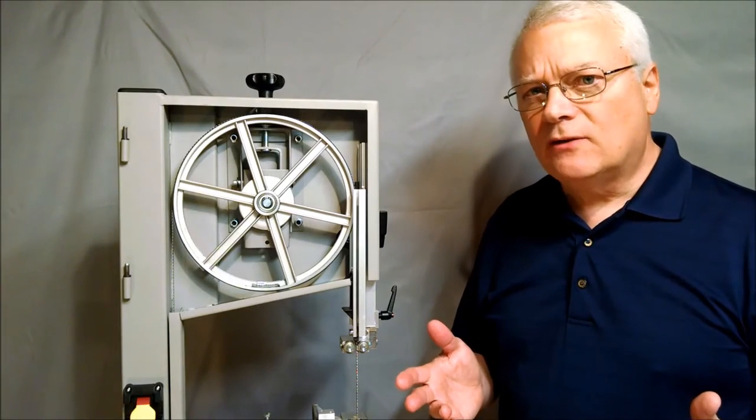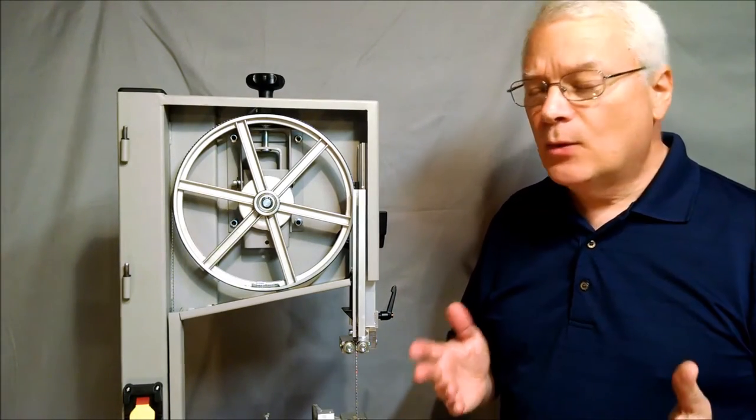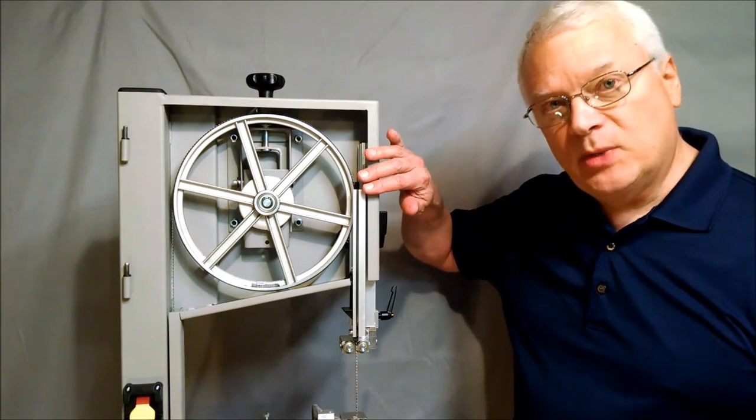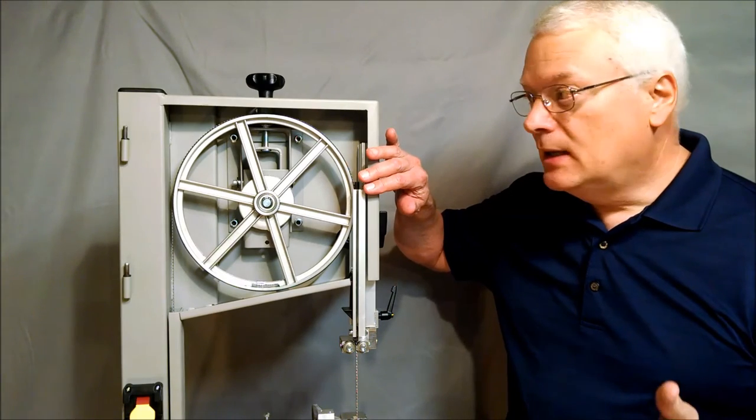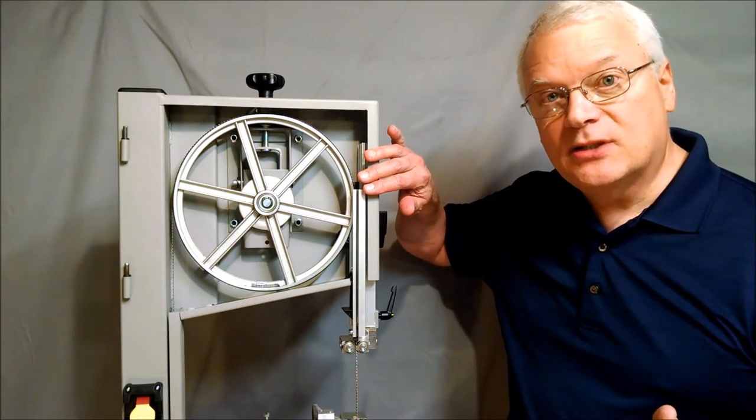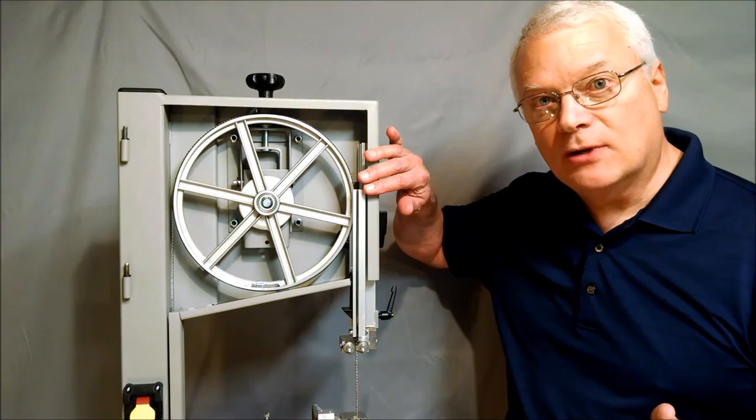So what was that cyclical vibration all about? Well, you might think that both wheels spin at the same speed and stay in the same relative position to each other. In fact, their relative positions change gradually as the saw runs.